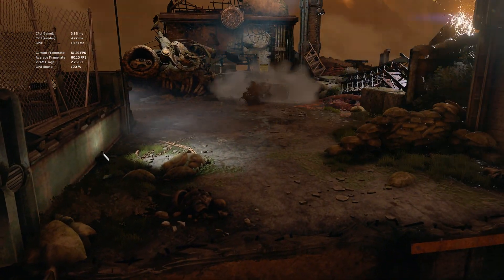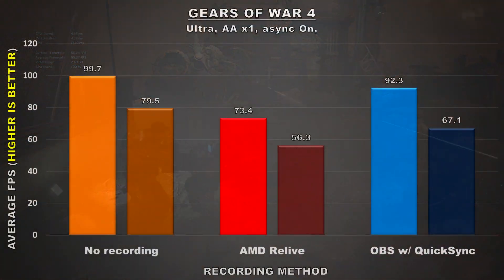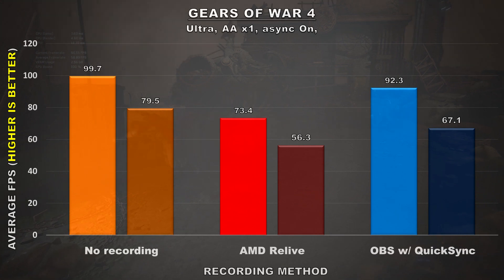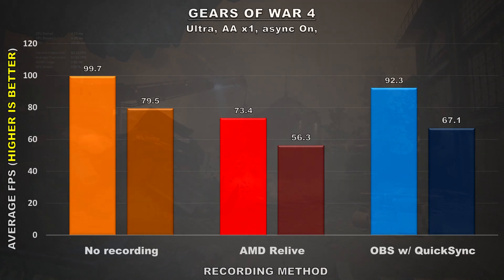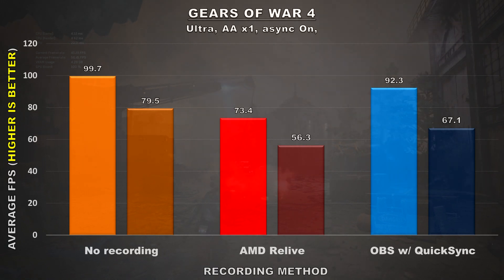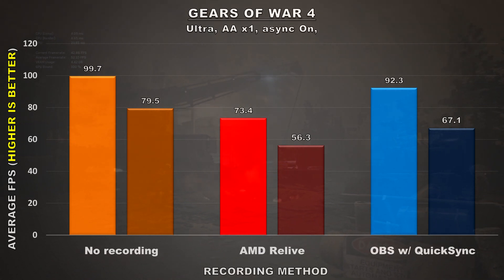Finally, the last game is Gears of War 4. This game separated itself from the rest by showing unusual results. The difference between the average frame rate with no recording and with AMD's Relive is 26.3 FPS — by far the biggest impact we've seen. Even OBS shows a considerable decrease of around 7.4 FPS, compared to the typical 3 to 6 FPS seen in other titles. The minimum frame rate gap is similarly large, with a 23.2 FPS difference between no recording and Relive. This didn't surprise me — I've always had issues with UWP games like Forza, Gears of War 4, and Halo Forge, likely because they run in borderless windowed mode rather than true full screen. Both recording methods showed significant performance loss, with Relive being the most impactful.